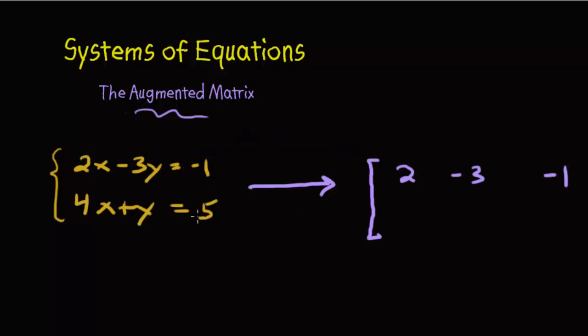Okay, so let's do that with the second equation. We have the 4, we have the 1, and then we have a 5. And then we normally put this vertical line separating the variable numbers, the coefficients from the variables, and then from the constants. Now we end that bracket, and there's our augmented matrix.